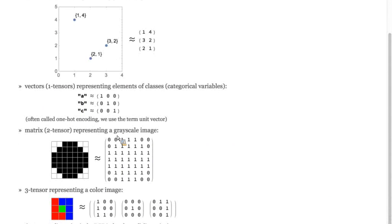Matrices can represent grayscale images, and then three tensors, the sort of generalization of matrices, could be used to represent images with multiple color channels, so red, green, and blue in this case.